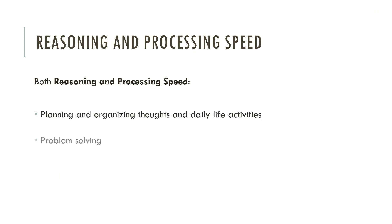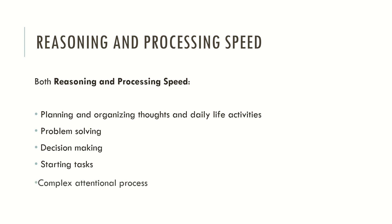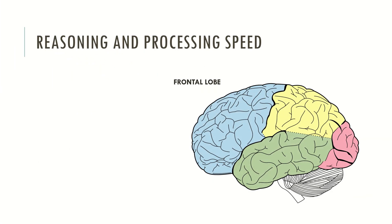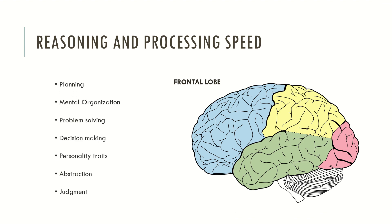Both reasoning and processing speed are very important in planning and organizing thoughts in daily life activities. They are also very important in problem solving, decision making, starting tasks and any complex intentional processes. Typically, reasoning and processing speed are associated with the frontal lobe. Several aspects described as higher order cognition are typically associated with the frontal lobe, including planning, mental organization, problem solving, decision making, personality, abstraction and judgment. Reasoning is involved in all of these higher order cognitive functions.